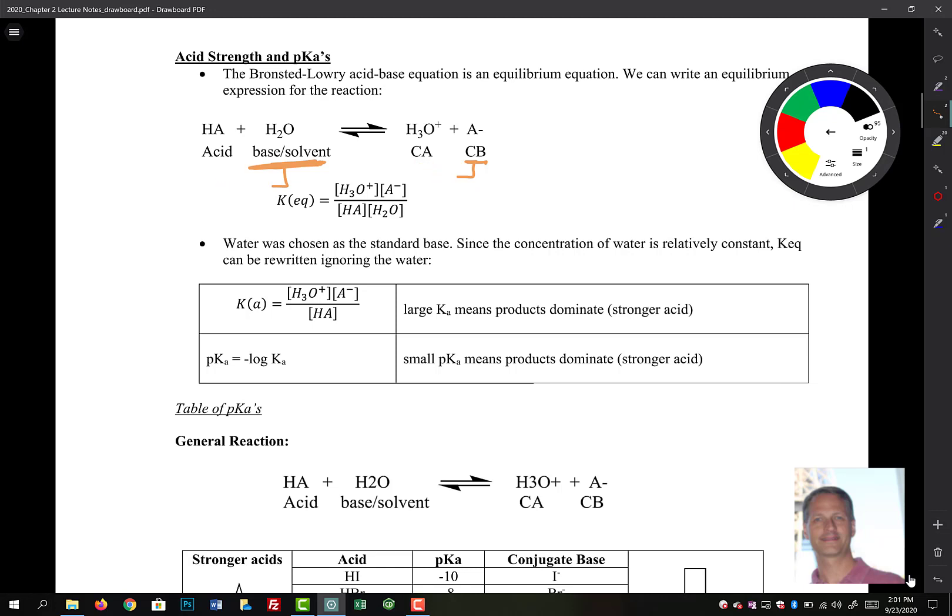If you recall, we can figure out the KEQ for this reaction. It's equal to the concentration of our products raised to their stoichiometric coefficient divided by the reactants raised to their stoichiometric coefficient. Because we chose water as our standard base when we do all these acid-base comparisons, we can just absorb it into KEQ and then we get down here our Ka.